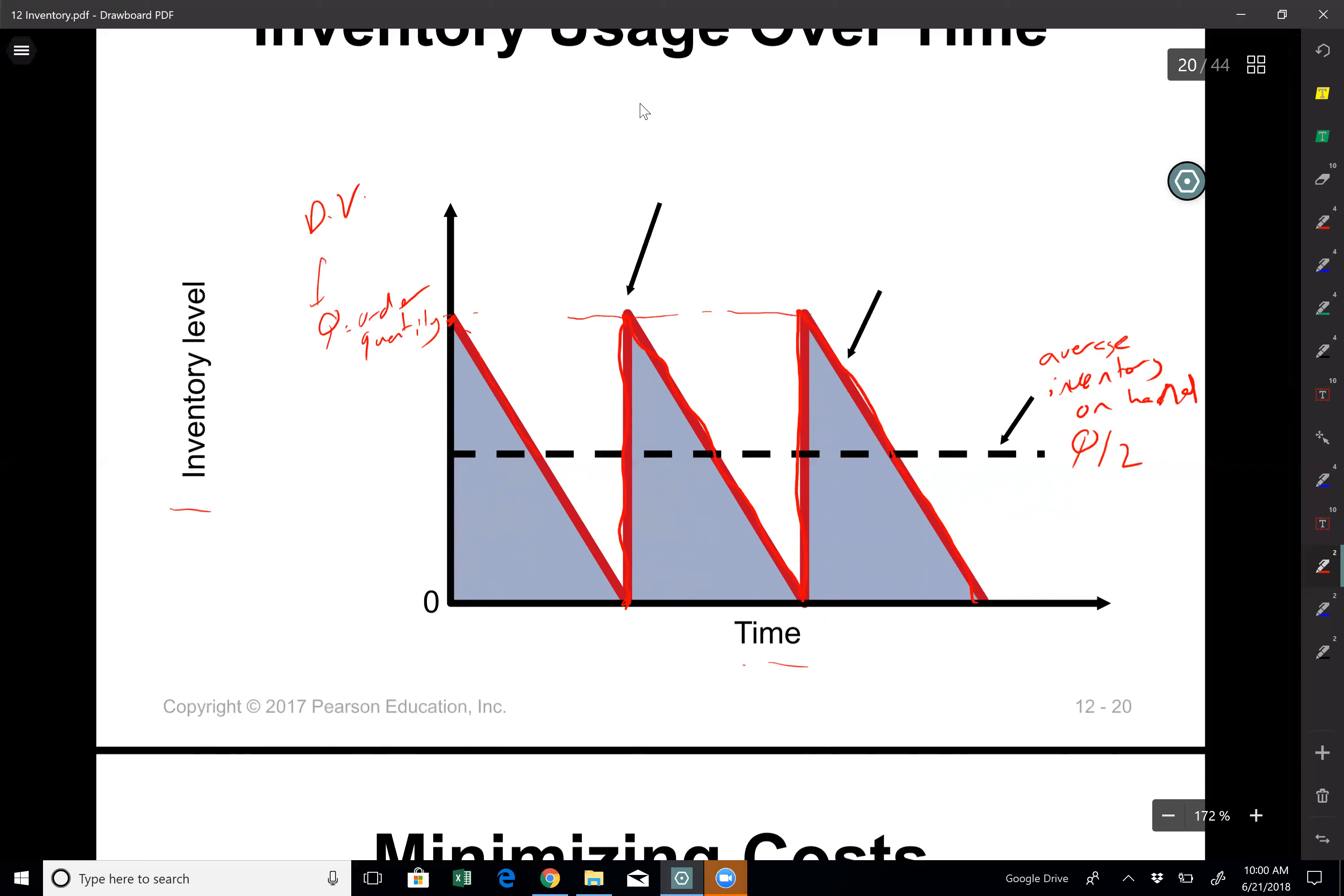The more products I order the more holding costs I will have and then less frequently I will order, then that will decrease my ordering costs but increase my holding costs. And so again this is my total order receipt and this is my usage rate right here. So the usage rate in other words demand.